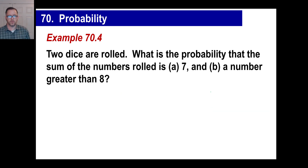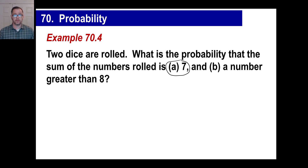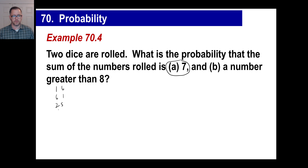Let's look at two dice. What's the probability that the sum of the numbers rolled is seven? Let's figure out the ways to get seven: one and six, six and one, two and five, five and two, three and four, and four and three. Those are six possibilities that give you a sum of seven.